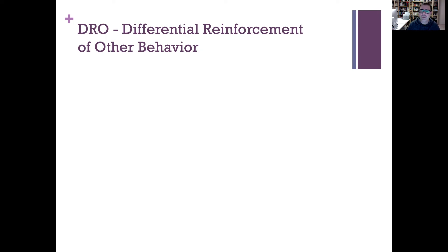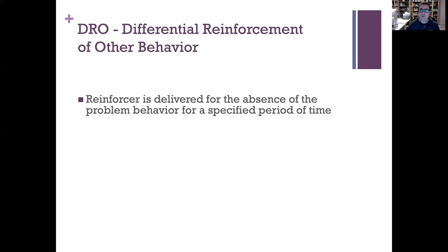DRO doesn't rely on teaching or reinforcing an appropriate behavior, but just any other behavior that is not the problem behavior. Therefore it is called differential reinforcement of other behavior. Essentially, the reinforcer — often the reinforcer identified as maintaining the problem behavior — is now delivered for the absence of the problem behavior for a specified period of time. As long as the problem behavior didn't occur for a specified amount of time, the reinforcer is delivered.